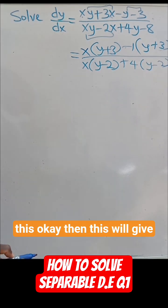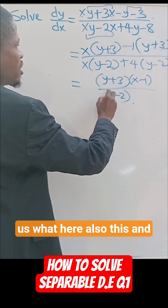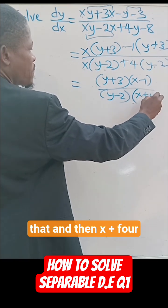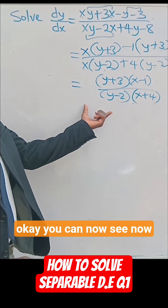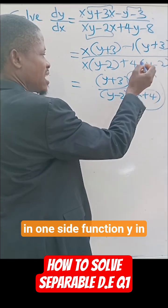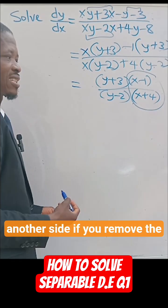Okay, then this will give us what? Here also, this and this is common, take one of that and then x plus 4. So that's all we have now. You can now see we are having the function of x on one side, function of y on another side.